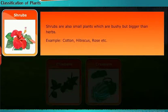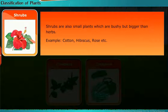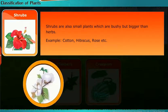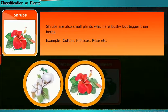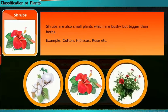Shrubs are also small plants which are bushy but bigger than herbs. Examples include cotton and hibiscus.